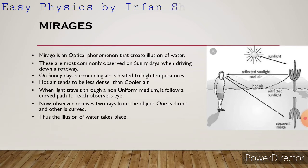Hot air tends to be less dense than cooler air. When light travels through a non-uniform medium — that is, hot air and cooler air, meaning different mediums — it follows a curved path to reach the observer's eye. You can observe this in the diagram, which shows the curved path of a light ray traveling to the observer's eye.